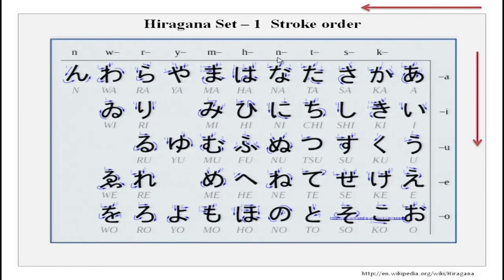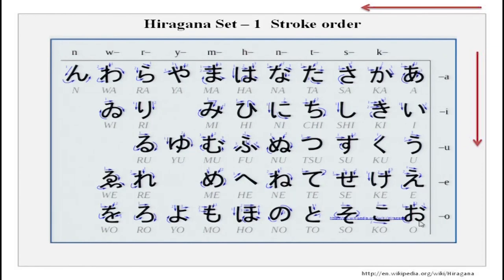For the n series, in a similar manner: na, ni, nu, ne, no. Then the h series: ha, hi, fu, he, ho. And then the ma series or m series: ma, mi, mu, me, mo.